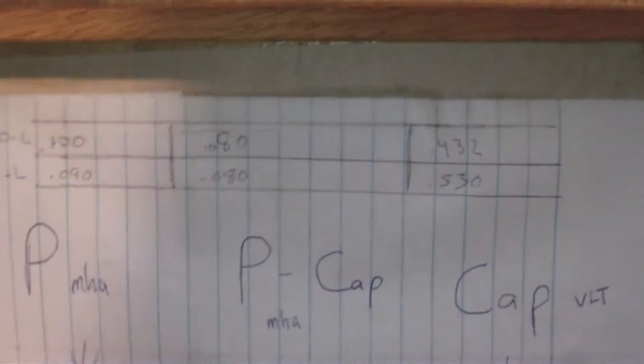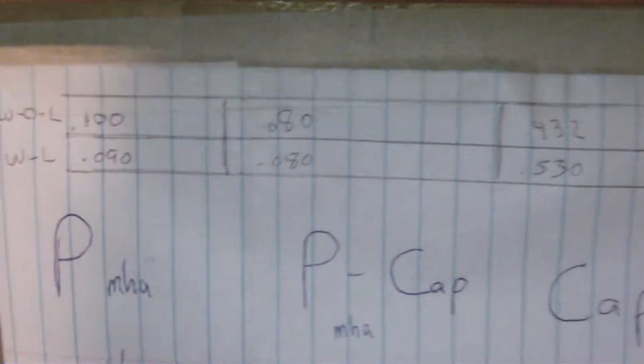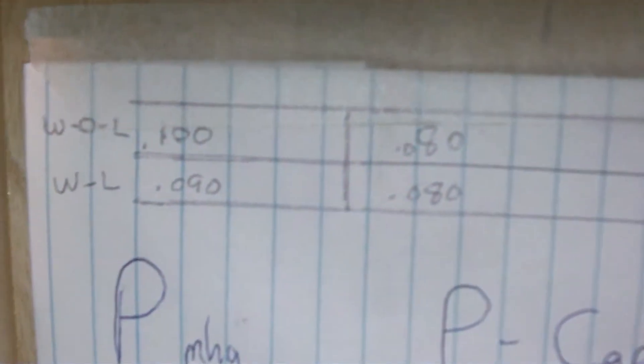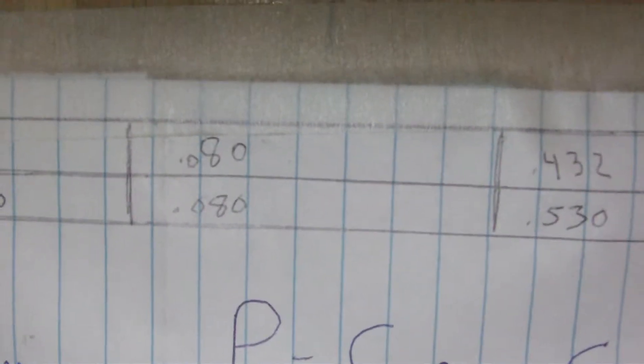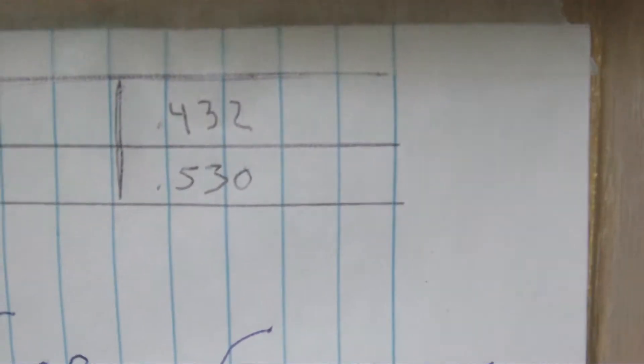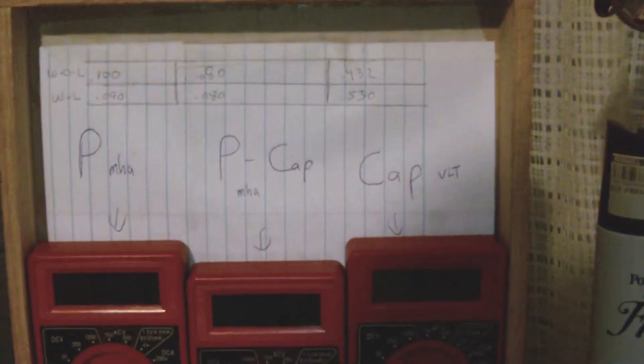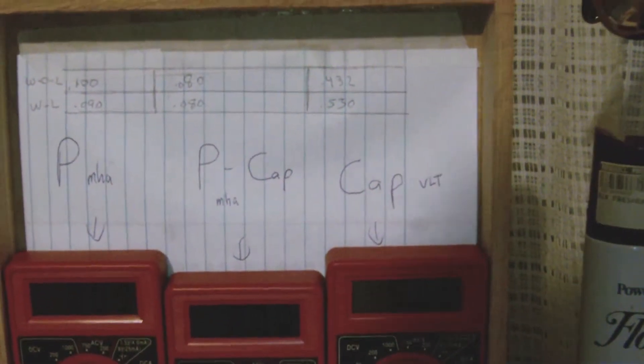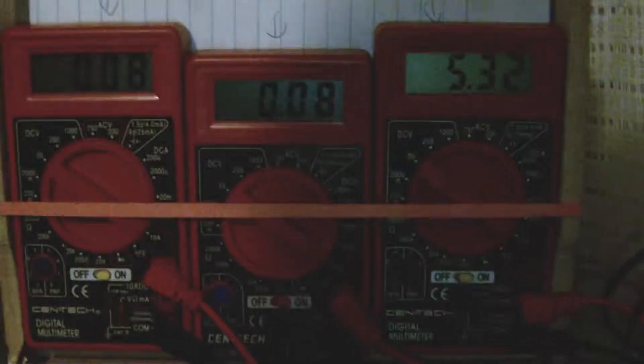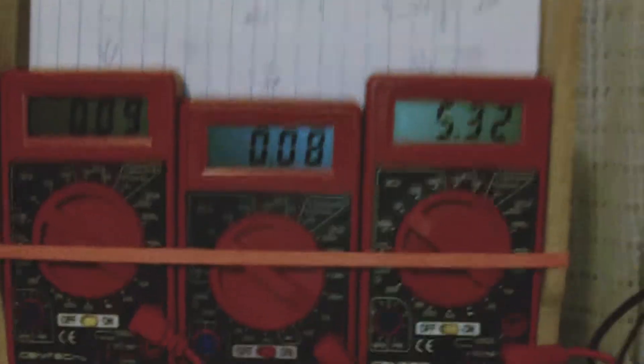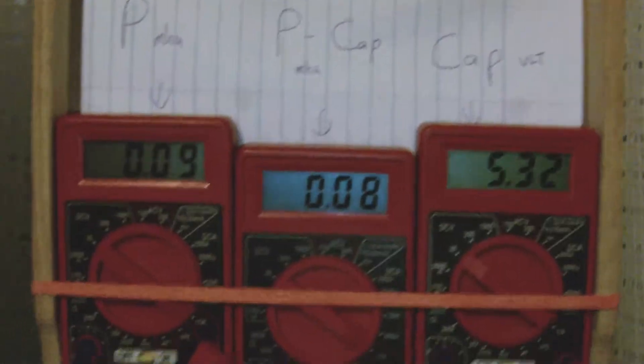As you can see the difference, when I put a load on it, it draws less milliamps from the battery. The capacitor stays about the same as far as current draw, and the capacitor comes up about a volt. So I'm using less energy, putting a load on it, and the capacitor is charging more. Like I said, if it was a direct relation to input versus output of the coil, it wouldn't be doing this.